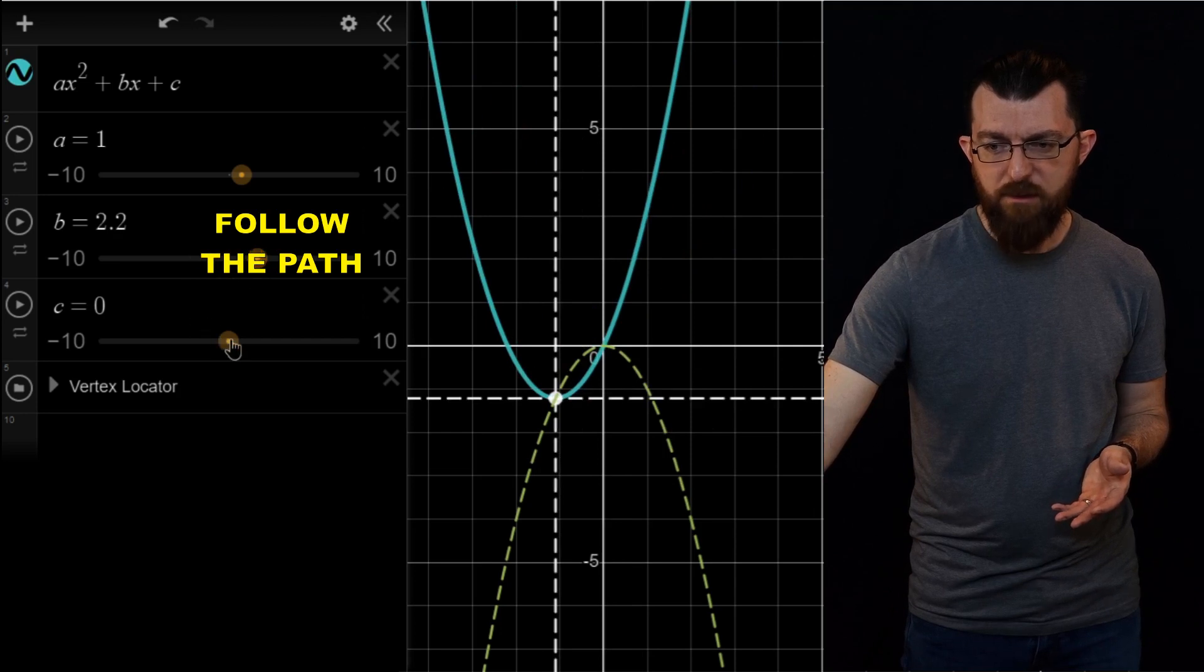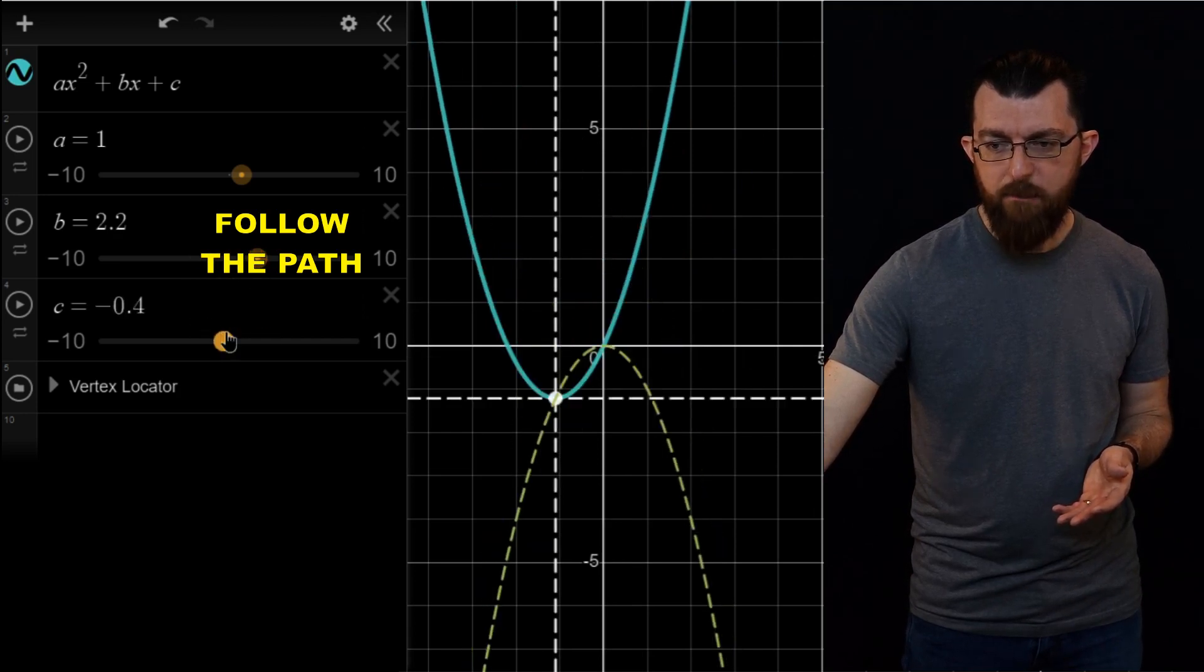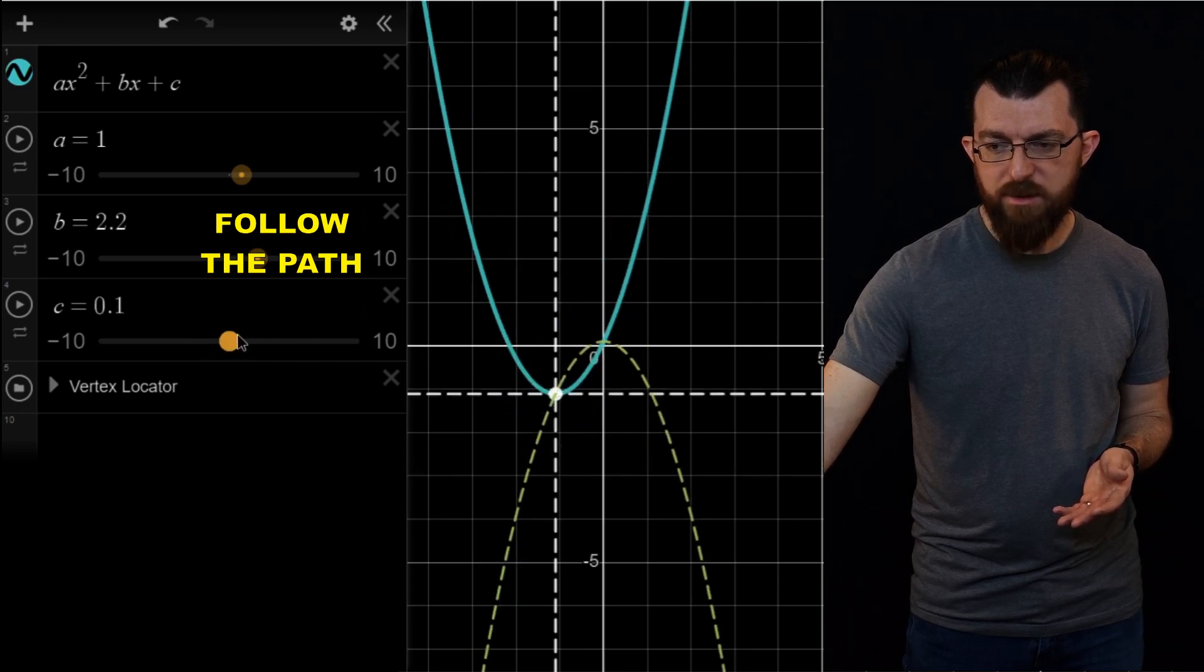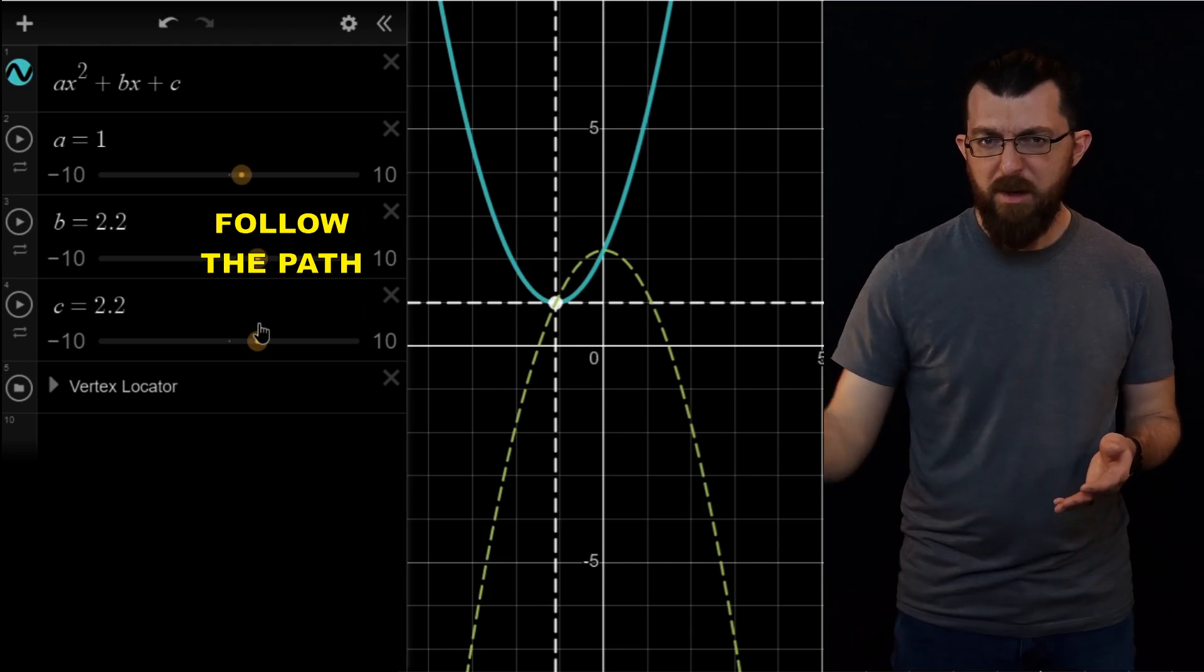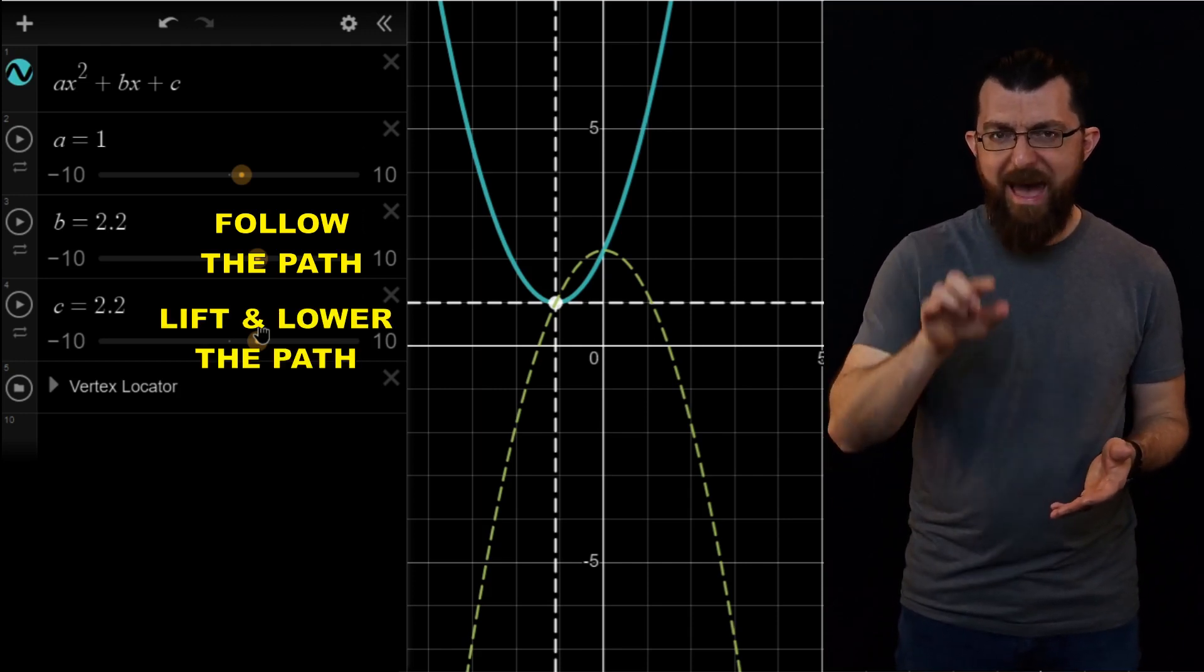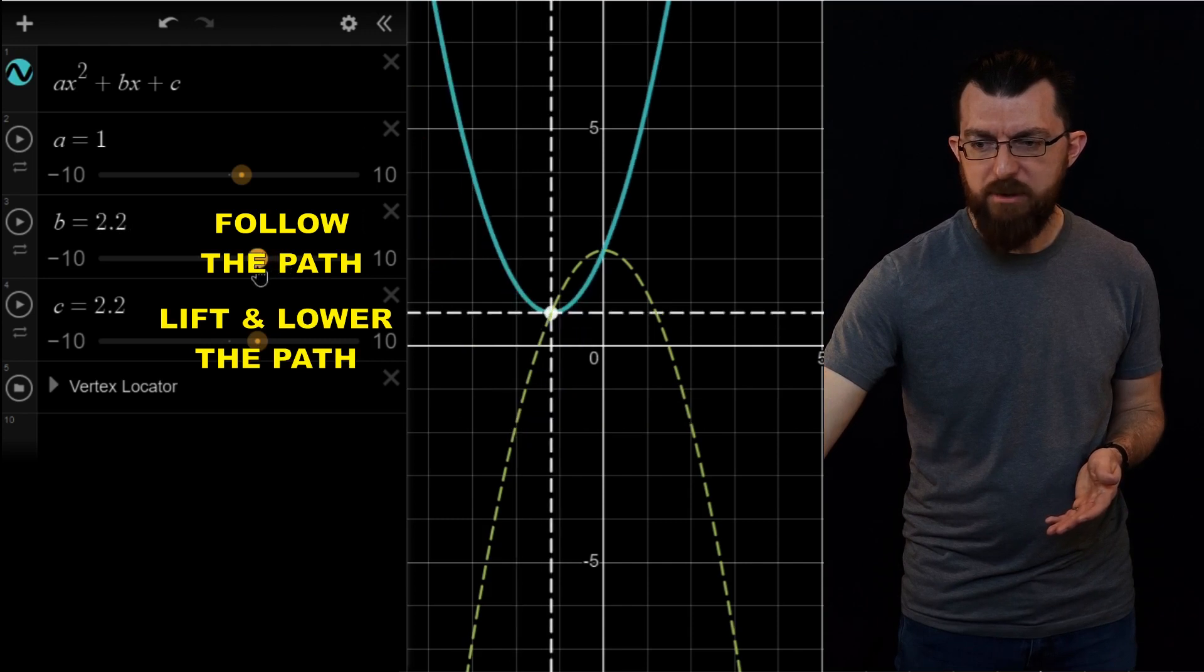And if you mess with c, you'll notice that that moves that track upwards and moves that track downwards. So c, you can think of as just moving that parabola up and down. But you can also think of it as sliding that path up and down. That path that B makes it travel along.